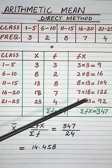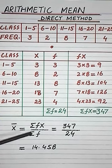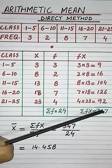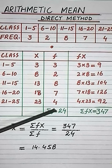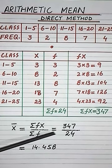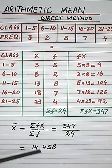After this, we take the formula and put values in it: sigma fx and sigma f. Then we do the calculation and at the end we find the arithmetic mean.